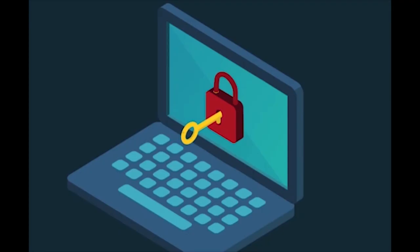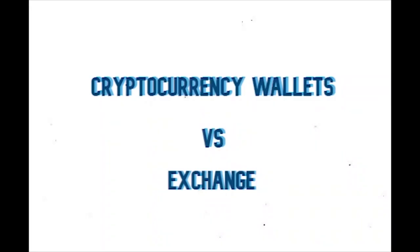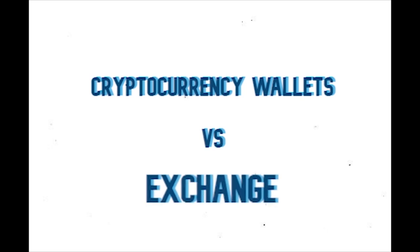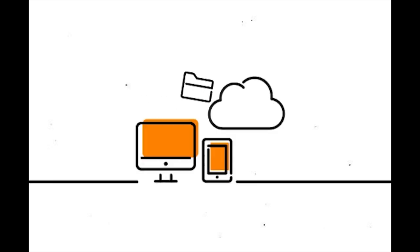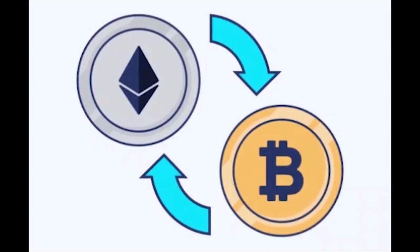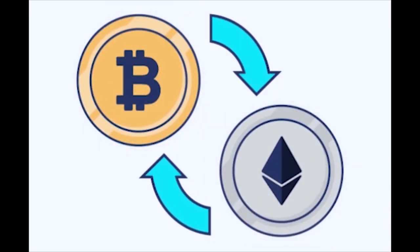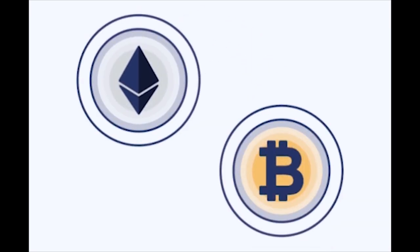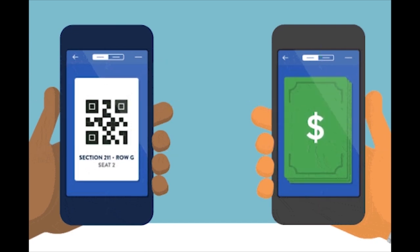Your private key acts like a password and your public key is like an email address. Now let's talk about the difference between cryptocurrency wallets and exchanges. The big difference is that the purpose of an exchange isn't to store cryptocurrencies — instead, the main goal is to provide a place to buy, sell, or exchange cryptocurrencies for other digital currencies or traditional currency like US dollars.